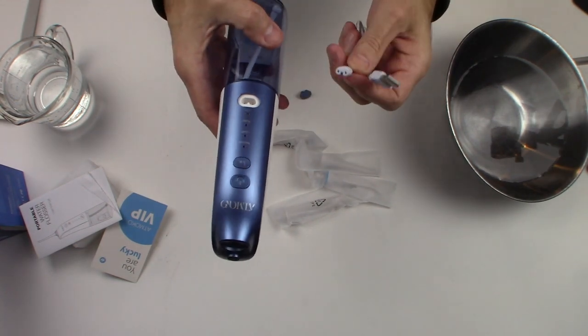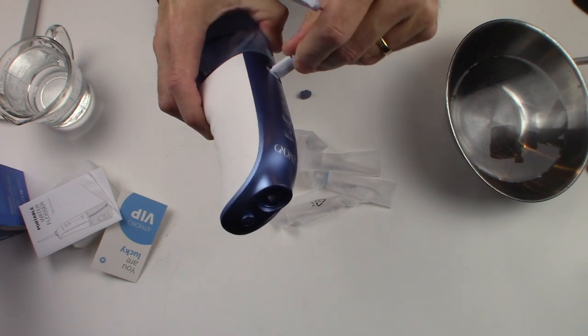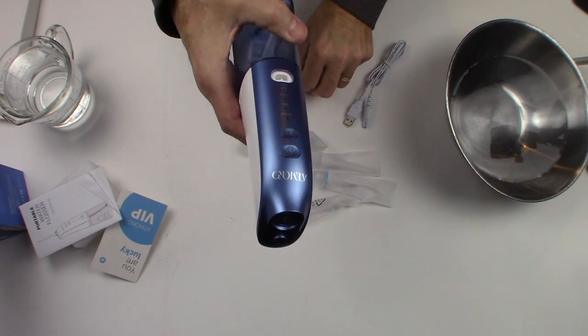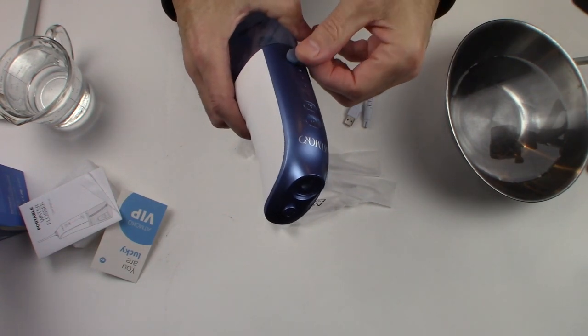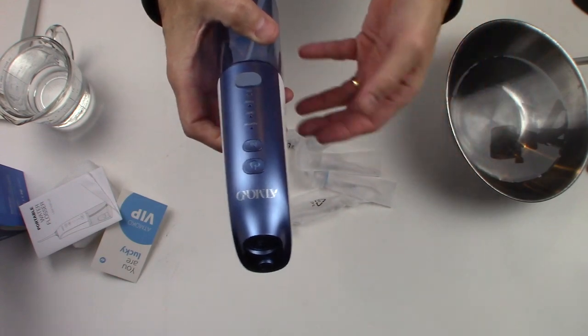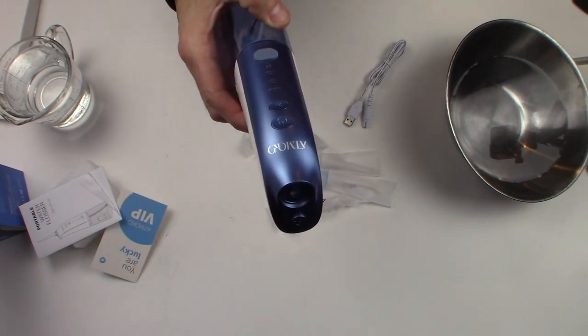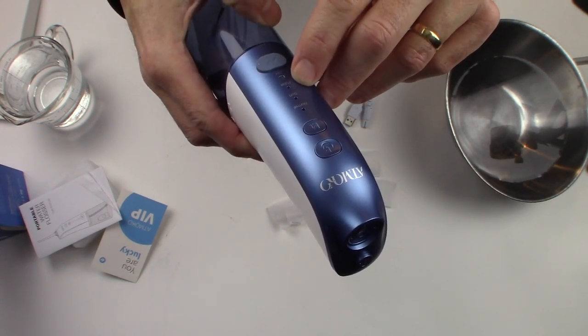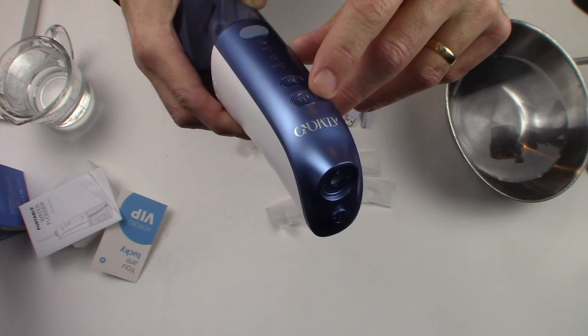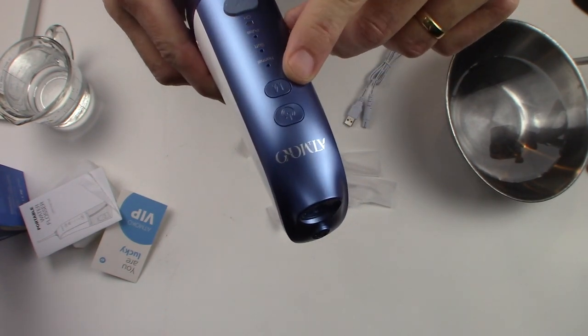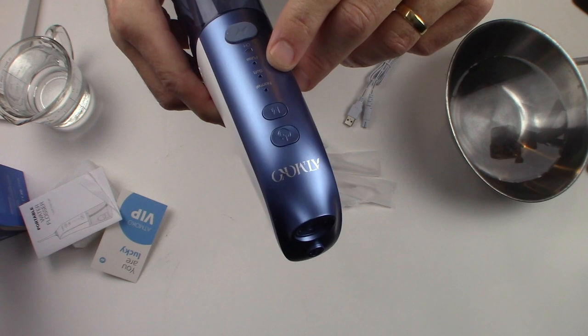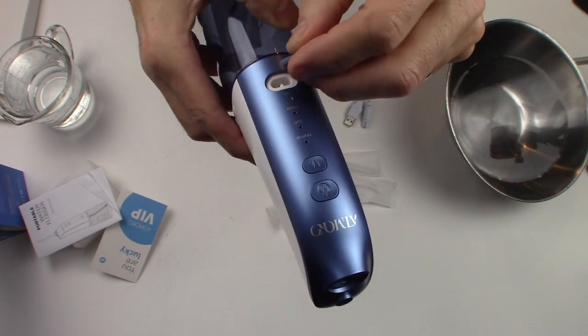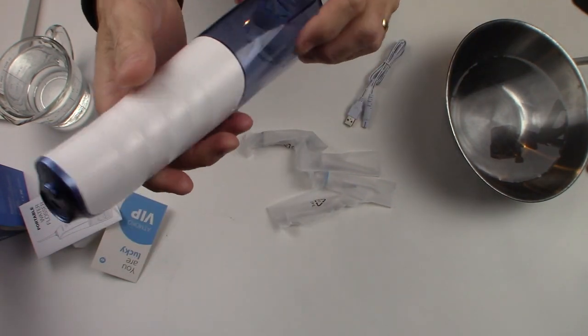Pretty easy, pretty straightforward. You can get quite a bit of use out of this - almost about 30 days of use at two minutes a day. It has different modes: normal mode, soft, and pulse mode. It's a power button and this is the M button for the modes. You have the three modes, the power button, the mode button, and this is the charge port.